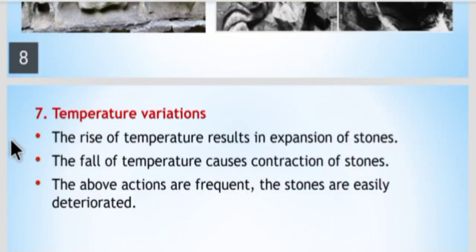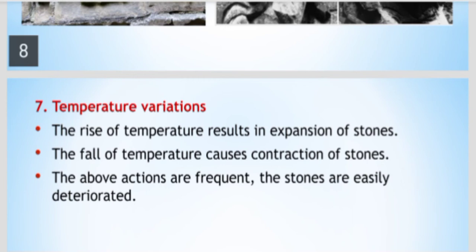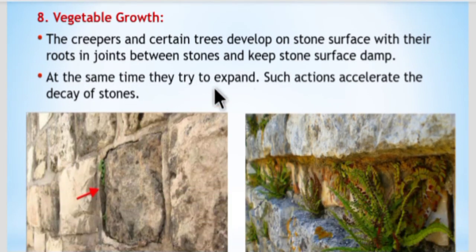The seventh reason is temperature variation. A rise in temperature results in expansion of the stone, and a fall in temperature causes the stone to contract. Due to this repeated expansion and contraction, the stone easily deteriorates and becomes unfit to use as a construction material.